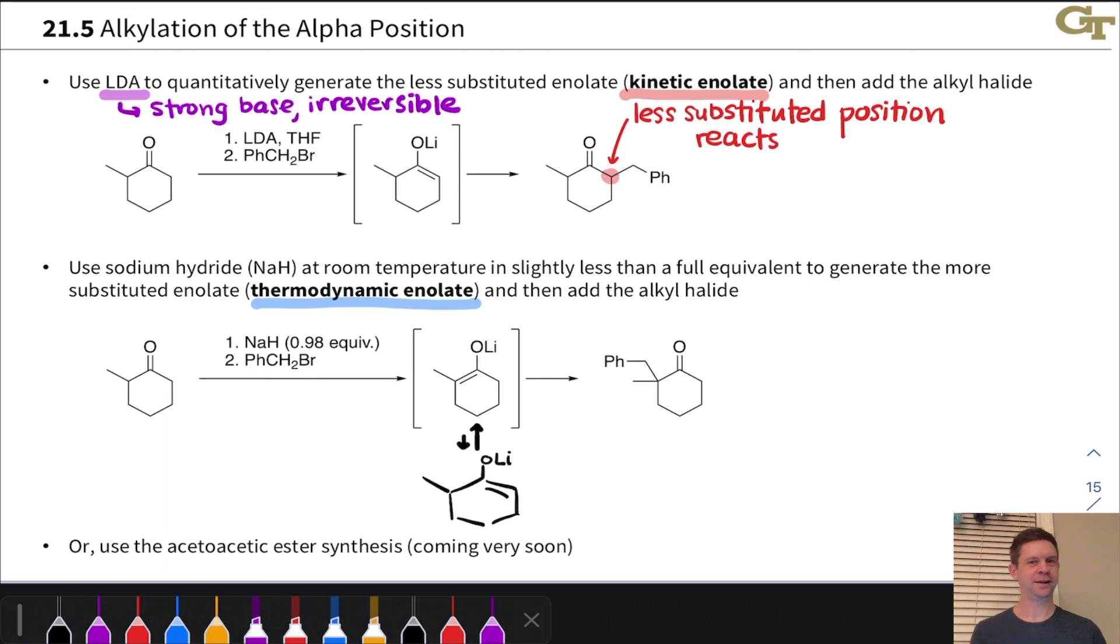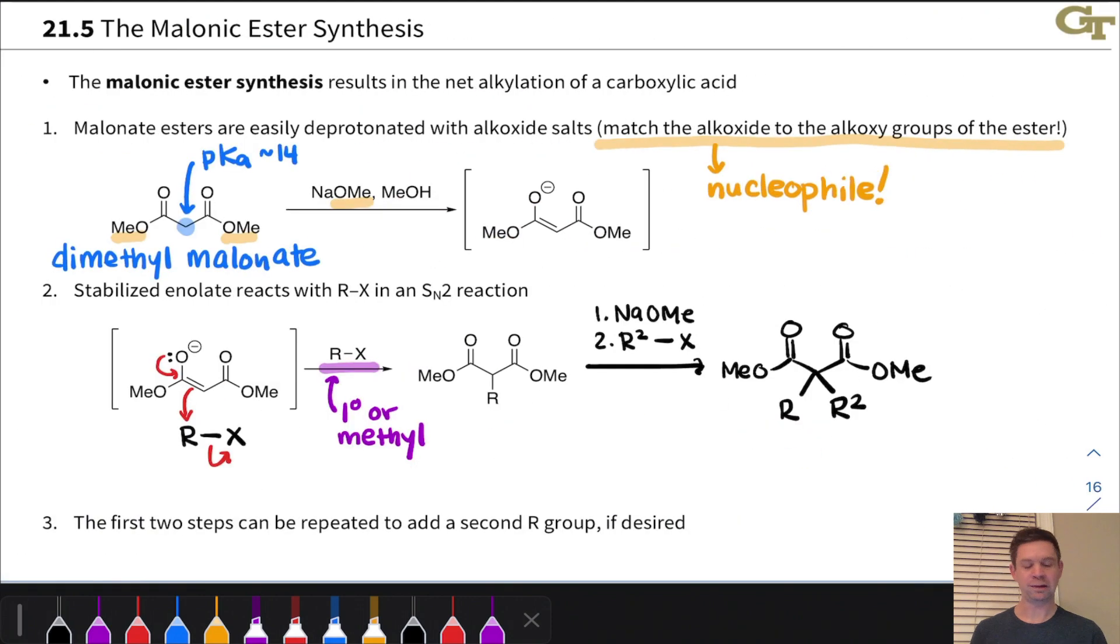So far we've discussed that it's not really a great idea to try to take advantage of, for example, this equilibrium to try to get the more substituted alkylated product out of alkylation of an enolate. And we looked at the malonic ester synthesis, which is an approach for synthesizing substituted carboxylic acids using a stabilized enolate, an alkylation of that stabilized enolate, as the basis.